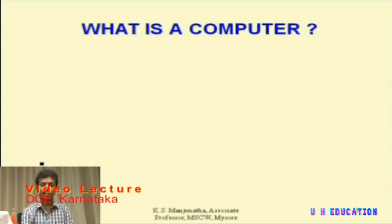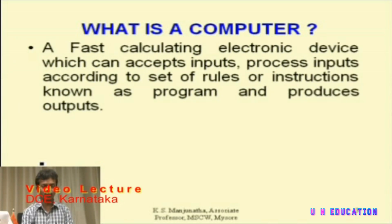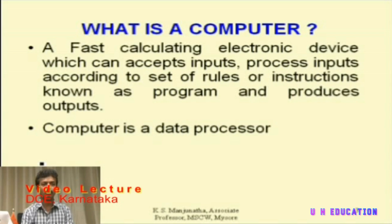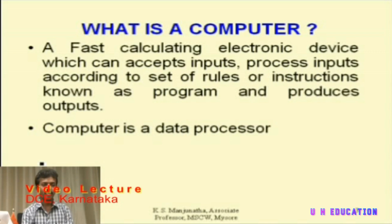Let us start with a simple question: what is a computer? A computer is a fast calculating electronic device which accepts input known as data, processes the data according to a set of rules or instructions, and finally produces the output. These set of instructions given to the computer to perform a specific task is called a program. A computer is basically a data processor. Data processing is one activity where the input given is the data, and data is nothing but raw facts or figures which do not possess any meaning at all.